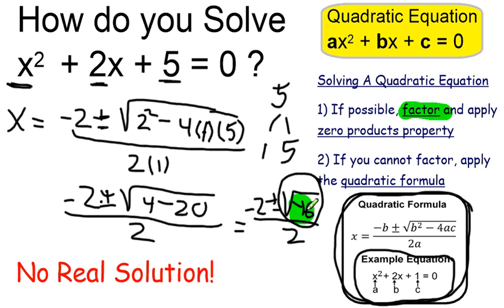So whatever number, integer, rational number, irrational number I plug in for x, it is not going to make my original equation true.